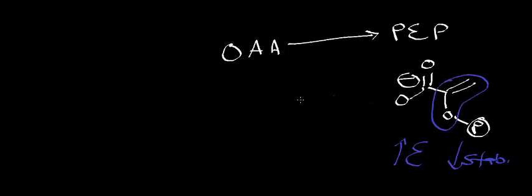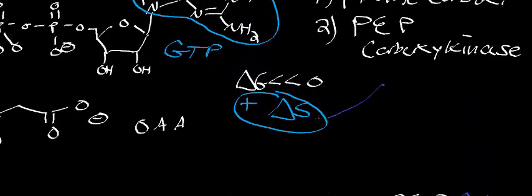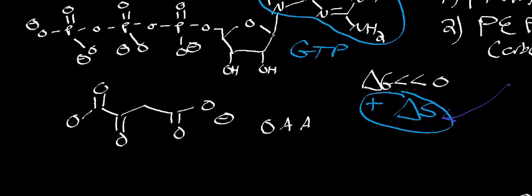And oxaloacetate is nowhere near as unstable as PEP. So what we're doing is, in terms of free energy, we're going from something with a lower free energy to something with a higher free energy. That's not really the most favorable thing in the world. But part of the reason that this reaction is able to occur is because it's going to use a positive increase in entropy in its favor. So let's actually look at the mechanism now.